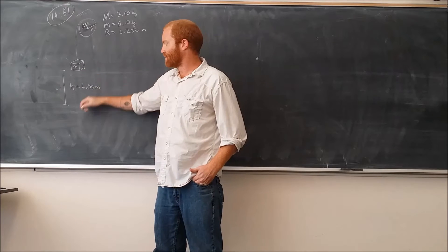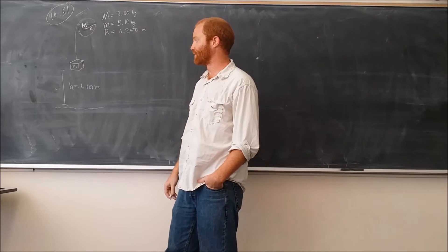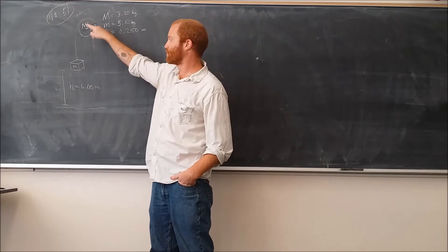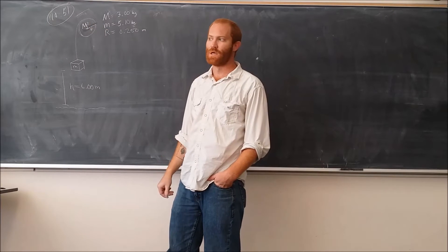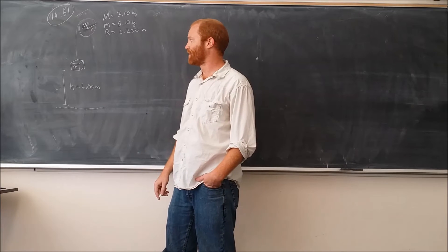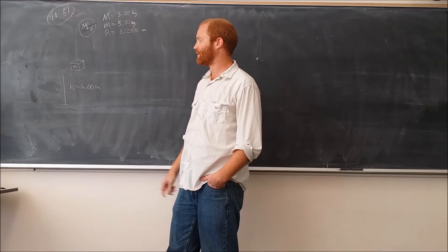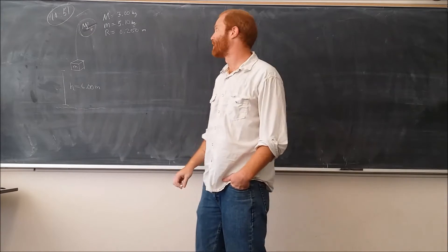This object starts at a distance of 6 meters above the ground, and it falls and it causes the pulley to spin and fall down. The first part asks us to calculate what the tension in this rope is, then we need to find the acceleration of the system, and then we also need to find what the speed is when the object gets down to the bottom.